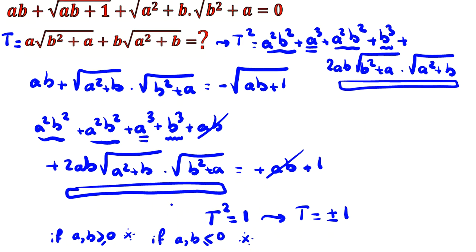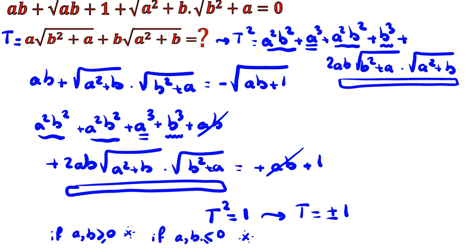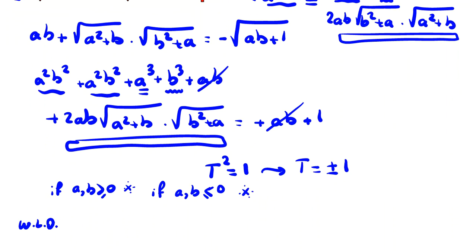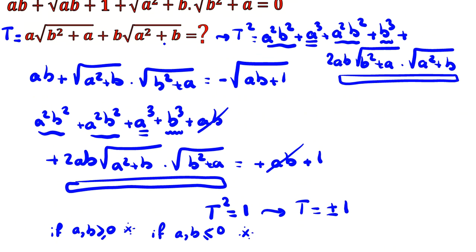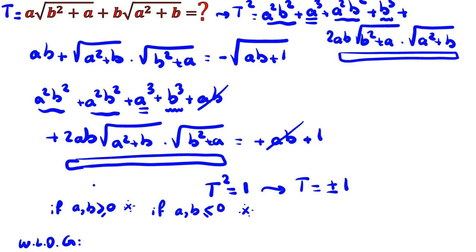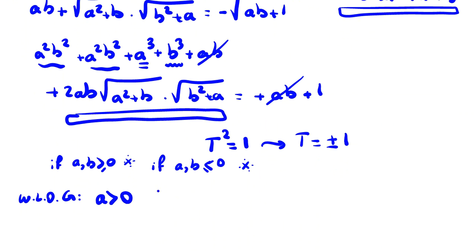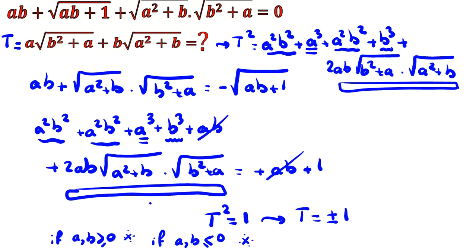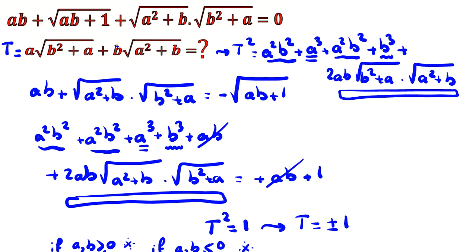So neither can both be positive nor both be negative, and zero is also excluded because it reduces to one of those cases. Therefore, without loss of generality — since a and b are symmetric — we can say a > 0 and b < 0.